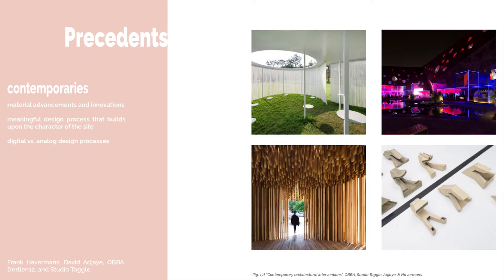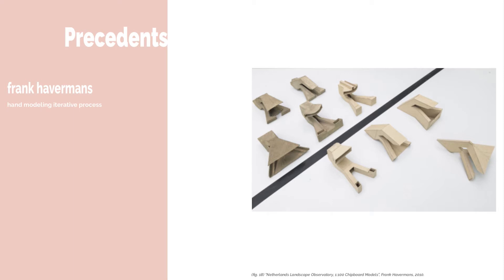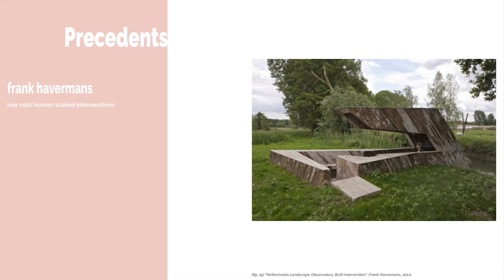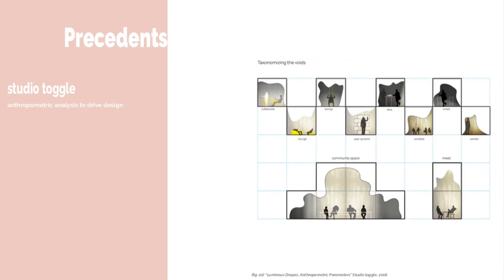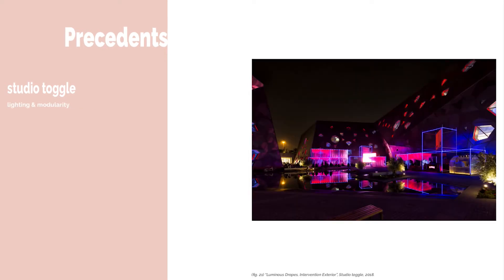Contemporary architects often develop meaning through an analysis of the site, which they apply to their architectural and material applications. Frank Havermans uses a strictly hand modeling process and works autonomously, increasing in scale until he finally reaches his full-scale intervention, creating and building low-cost, human-scaled interventions within a variety of environments. In Luminous Drapes, Studio Toggle applies anthropometric analysis in drawing to drive their design method and spatial organization, then uses lighting and modularity to express each of the different modes of activity identified.